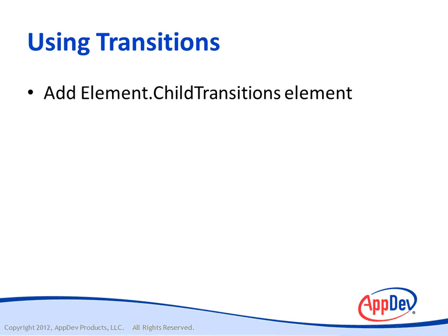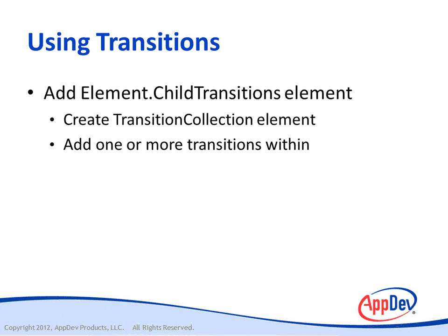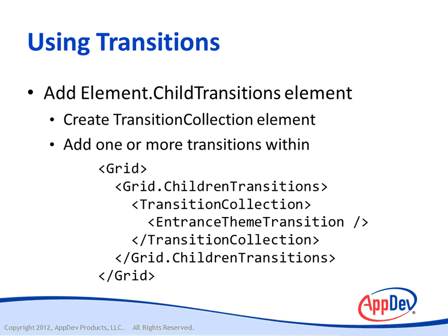To use these transitions, you add an element.childTransitions element, and within that you create a transition collection element and place your transition information inside of that. This can apply to any element, and you add one or more transitions within that transition collection element. For example, for a grid, if you want the children of the grid to slide into place, you'll set the grid.childrenTransitions property and then within that create a transition collection. Inside the transition collection, you create one or more transition elements which define the behavior — in this case, we're using the Entrance theme transition.